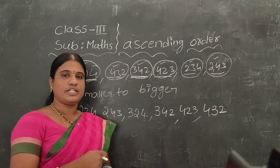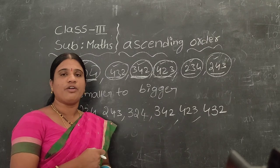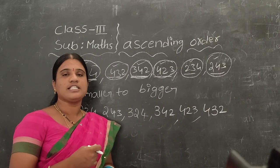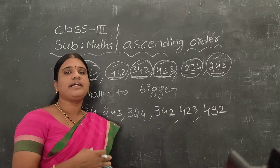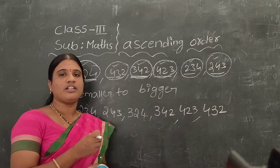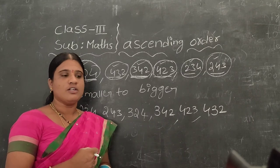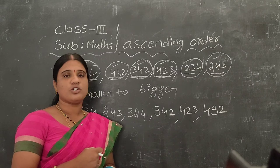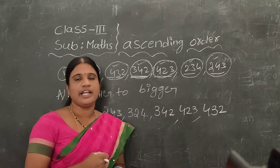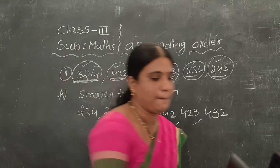Descending order is the same but opposite — you have to arrange the numbers from biggest to smallest, writing the biggest number first. I will send the notes. You have to write them in your notes. Take care of yourself. Thank you. Bye.